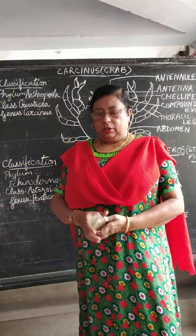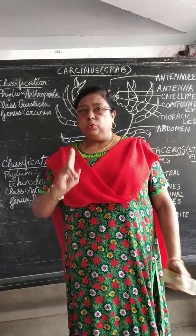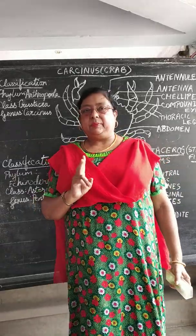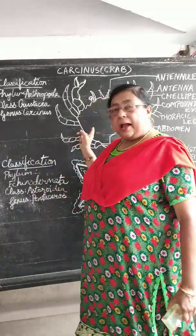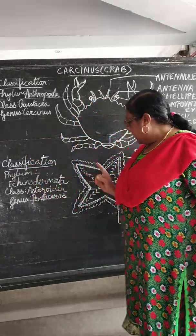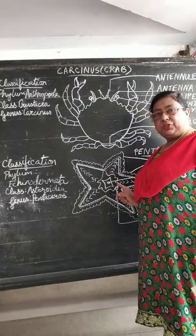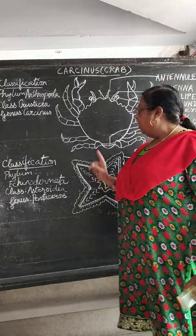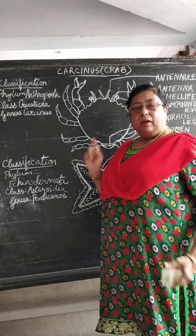Good morning children. Today we are going to do two museum specimens. One is the crab and the second one is the starfish. Now first we begin with the crab.